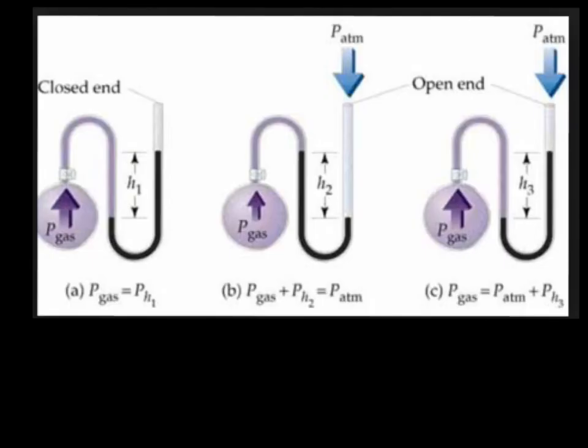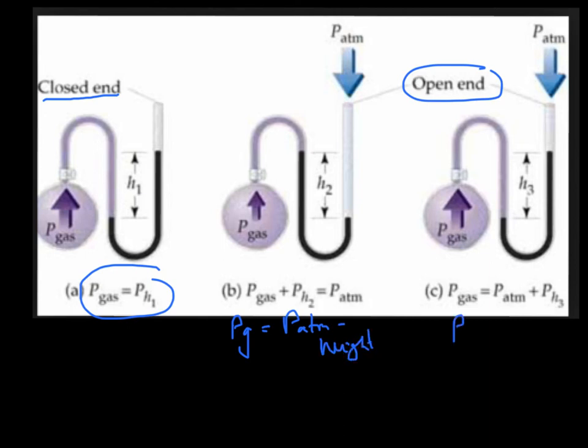So just to summarize, if you have a closed manometer, the pressure of the gas just equals the height of the column. If you have open manometers, it depends. In this case, you can see that the gas is kind of losing, so the pressure of the gas equals the pressure of the atmosphere minus the height. Over here, the pressure of the gas is the pressure of the atmosphere plus the height. So that's how we measure atmospheric pressure and how we measure gas pressure.